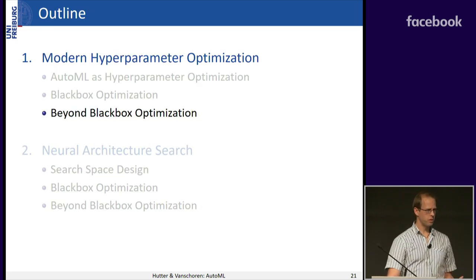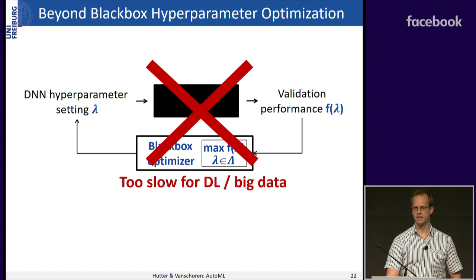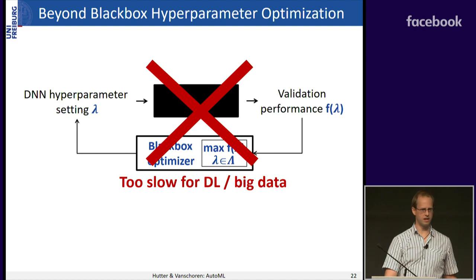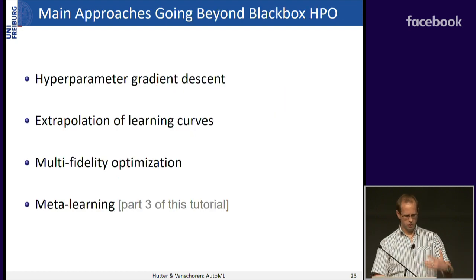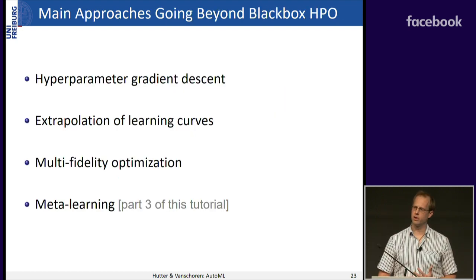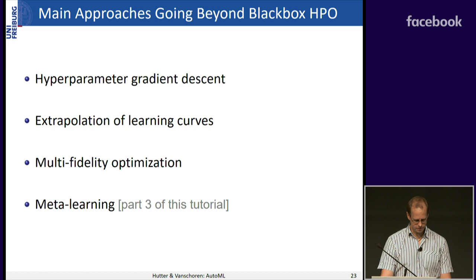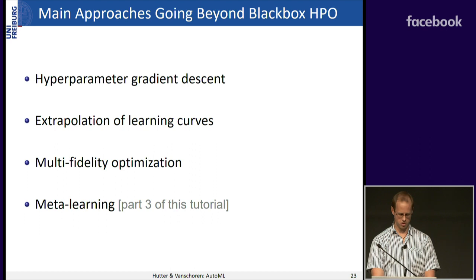Now I'll talk about how to speed things up. The black-box view is too slow for deep learning and big datasets — if a single evaluation takes a week, getting 50 samples would take a year. There are four different types of approaches for going beyond black-box optimization: meta-learning (which Joaquin will cover), hyperparameter gradient descent, learning curve extrapolation, and multi-fidelity optimization. I'll briefly touch the first two and focus on multi-fidelity, which is the most mature method right now.